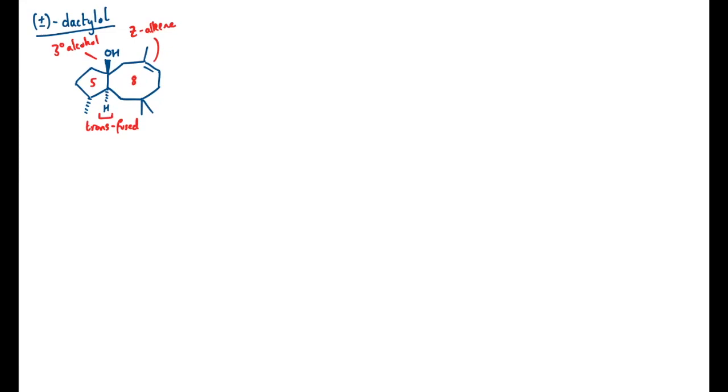Now that already highlights one issue that we have to think about in our retrosynthesis. The trans ring fusion between a 5 and an 8-membered ring is probably not the most thermodynamically stable. For pretty much everything that's not a 6-6 ring fusion, the cis ring fusion is more thermodynamically favorable. If we disconnect near that ring juncture, we might end up holding a group in a not particularly favorable arrangement.